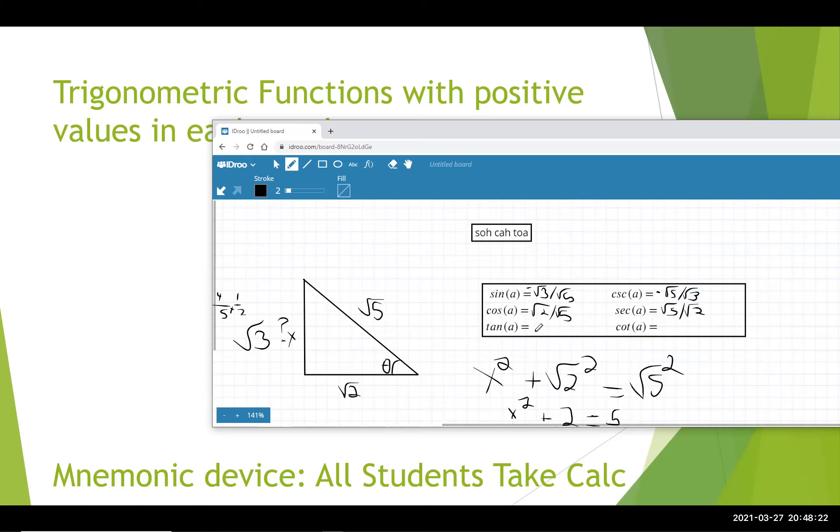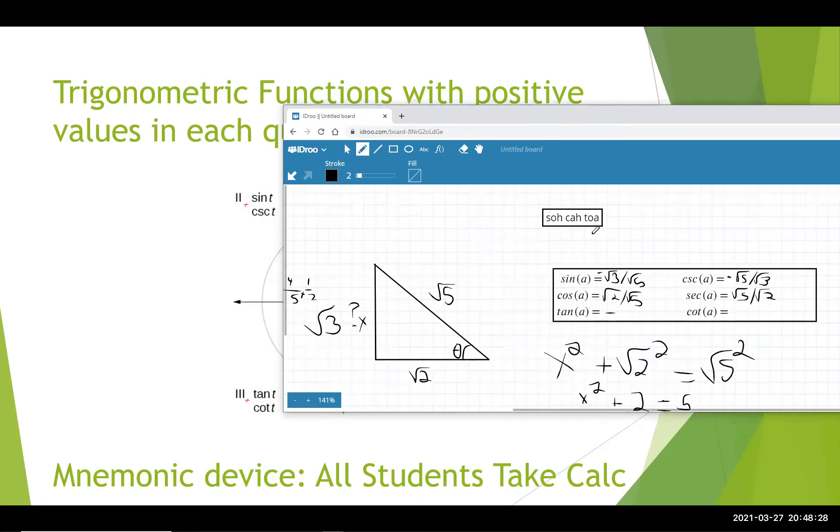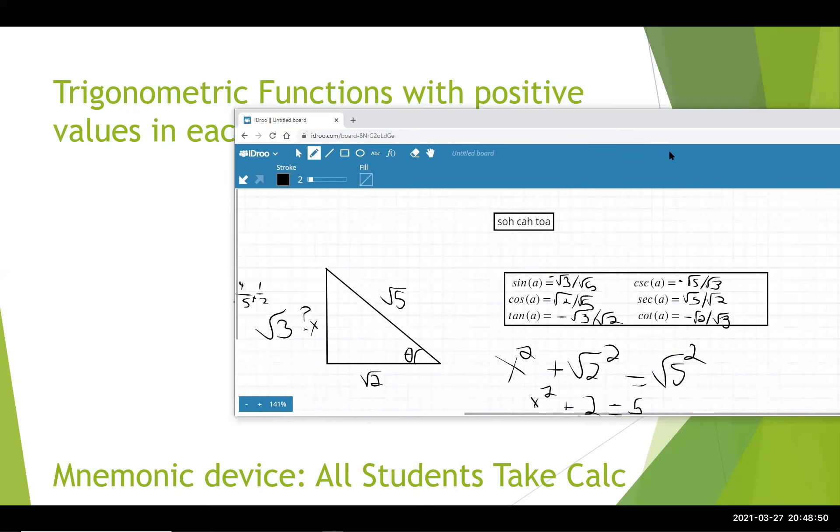And lastly, tangent is also going to be negative because we're in the fourth quadrant. Tangent isn't one listed. Tangent is the opposite side over the adjacent side, so negative square root of 3 over the square root of 2, and the reciprocal. And that is how we find that. So these are the answers that we're looking for.